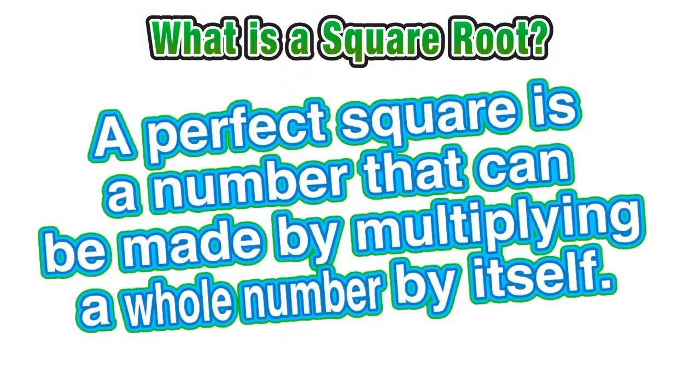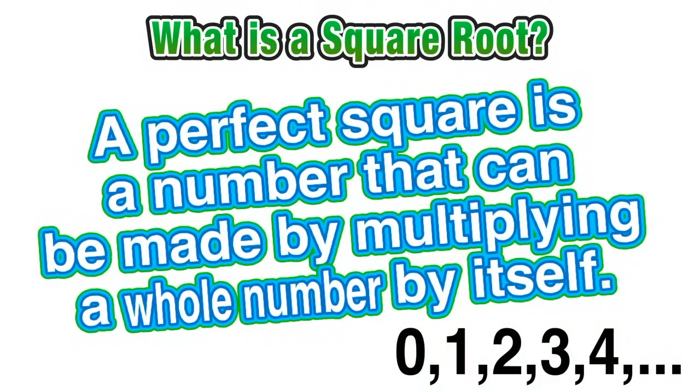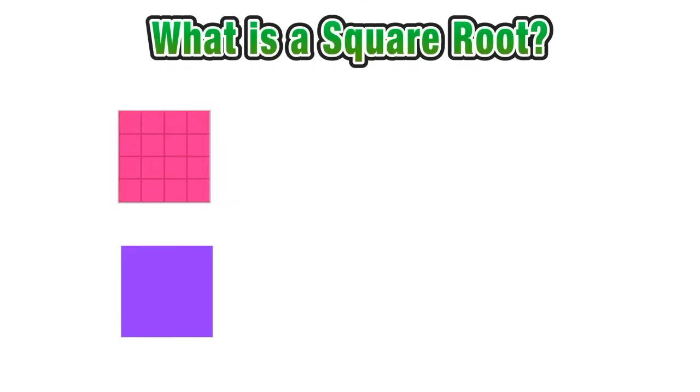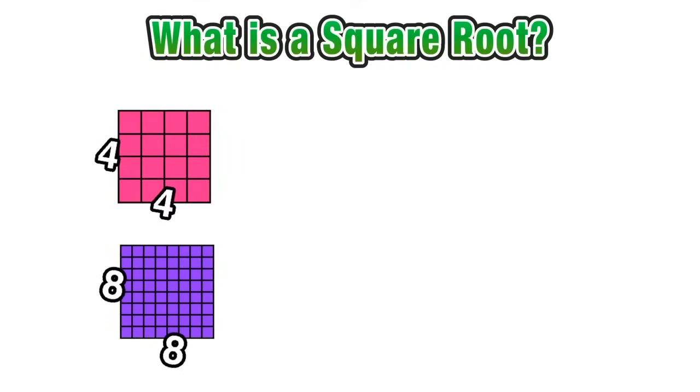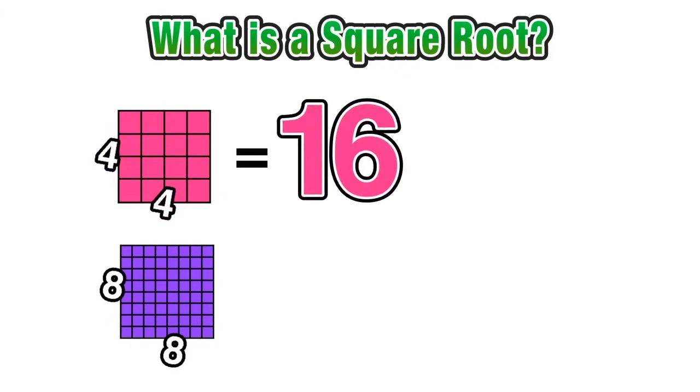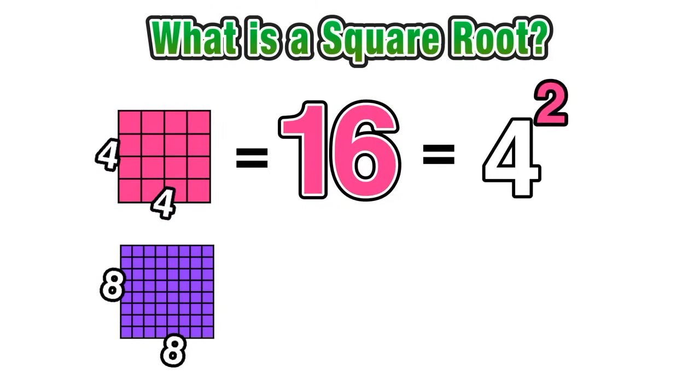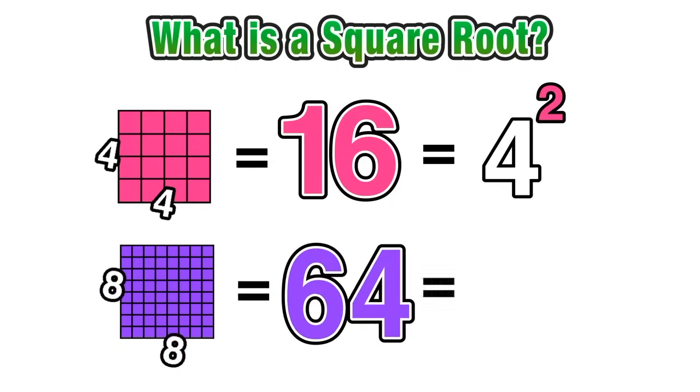Now we can say that a perfect square is a number that can be made by multiplying a whole number by itself, by squaring any whole number. We can revisit the two perfect squares from earlier: the 4 by 4 square and the 8 by 8 square. 4 times 4, if we think of this in terms of area, is 16, which is equal to 4 squared. And 8 times 8 is equal to 64, which we know is equal to 8 squared. Notice again that 4 and 8 are both whole numbers.